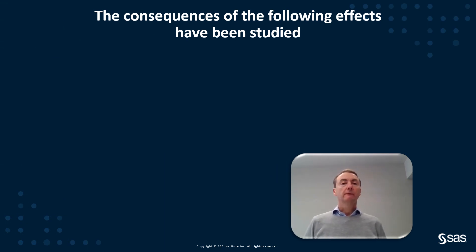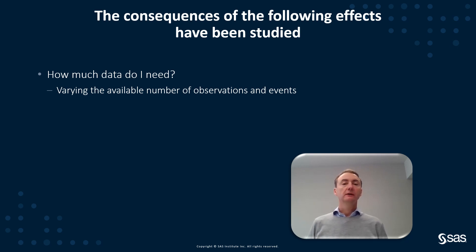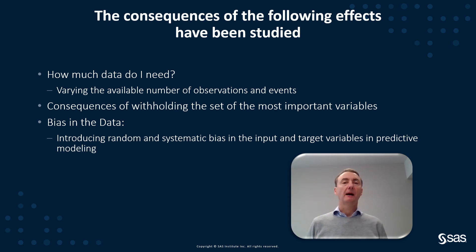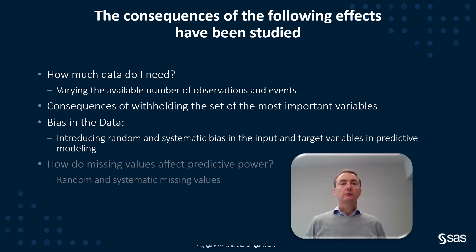In the context of my data quality for analytics book, I have analyzed various scenarios of bad data quality and their effect on machine learning model accuracy. We are going to take a look at data quantity — what happens if I vary the number of available events or observations in supervised machine learning models. We will also look at what happens if we withhold certain variables from our training data, and what happens if we bias the data, namely the input variables or the target variables. There is another scenario where I looked into missing values, but this is presented in a separate webinar.